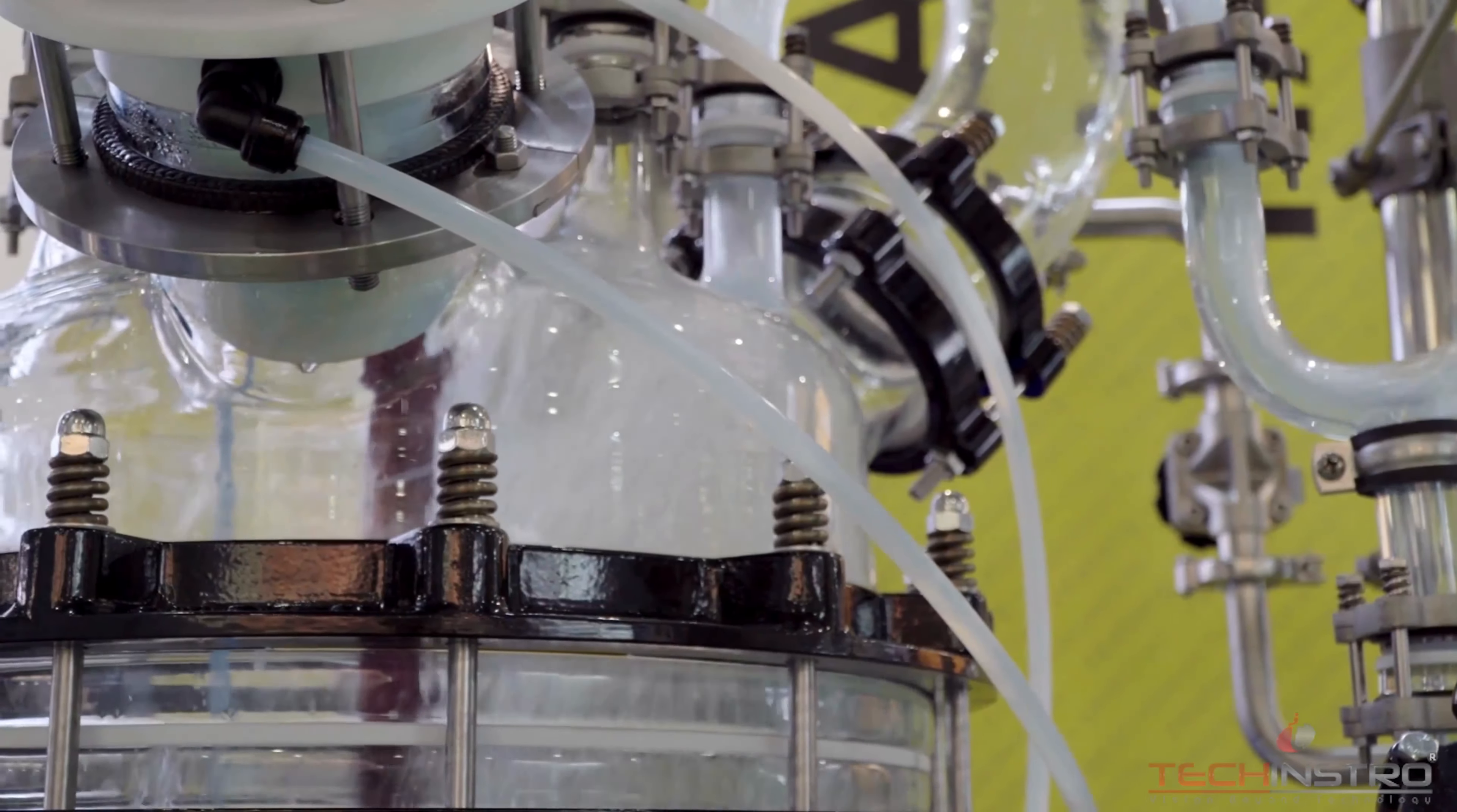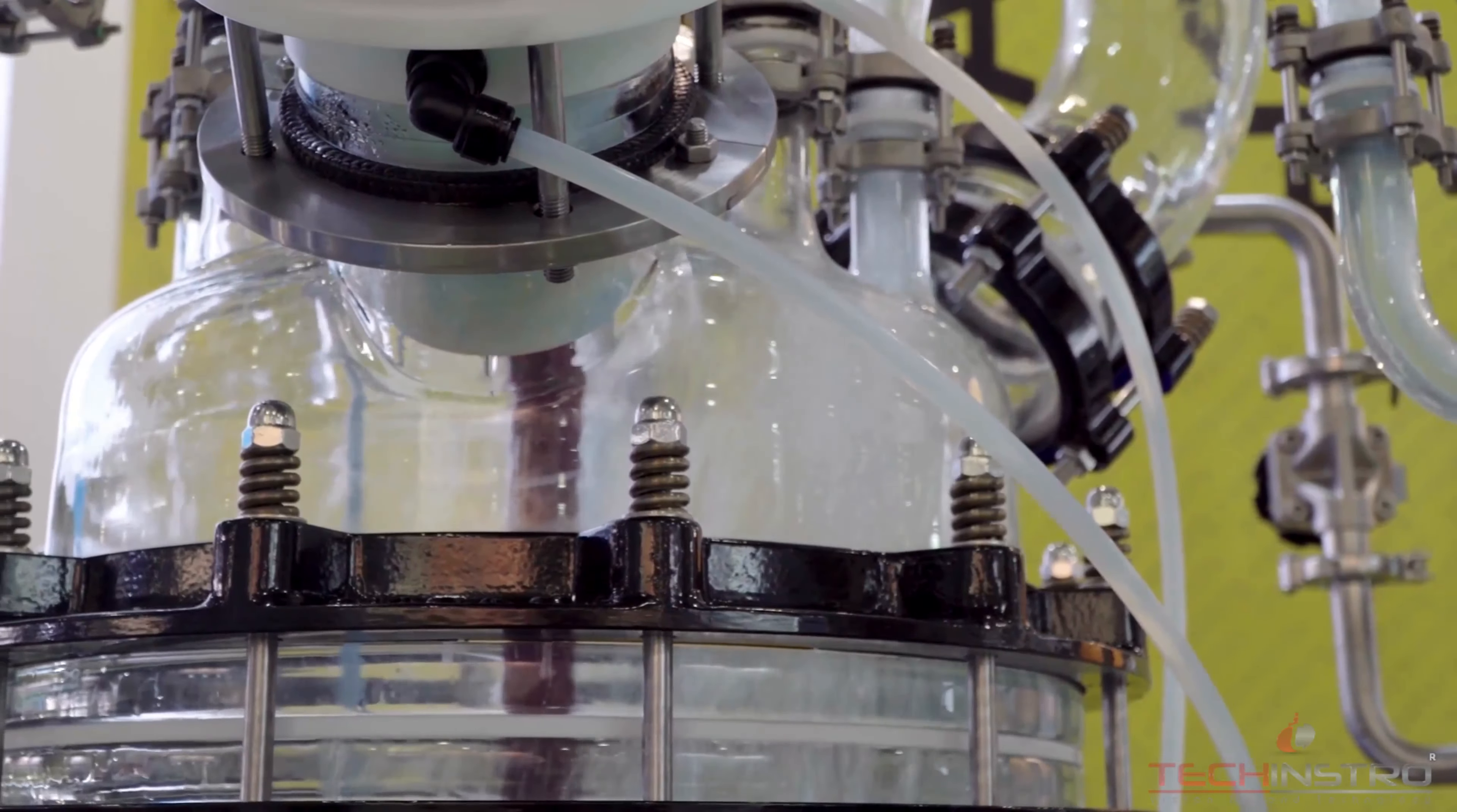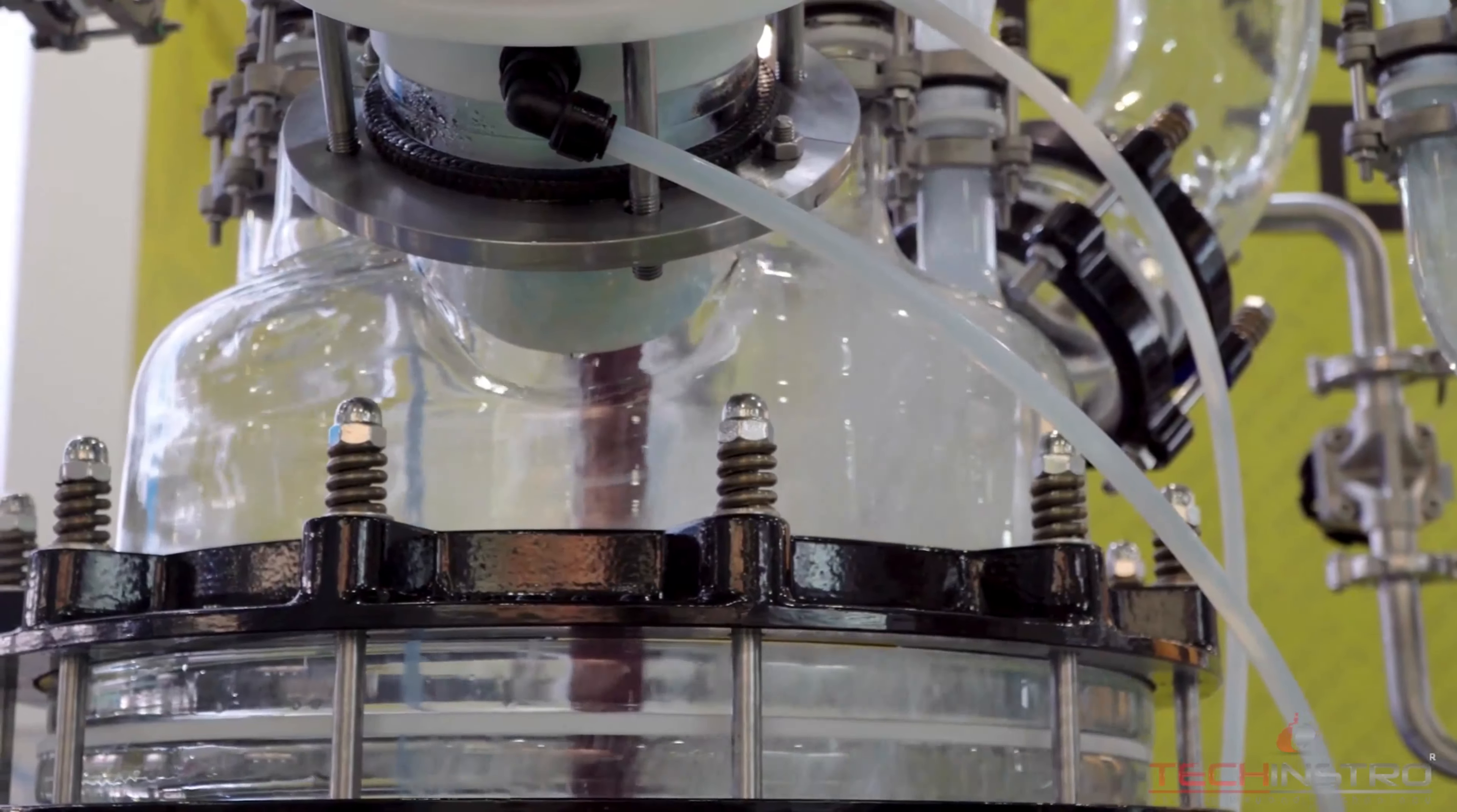The pressurization system of the reactor is equipped with systems to pressurize the contents within. This is achieved using a pressure source such as compressed gases or hydraulic systems. The pressure is increased to the level required for the specific chemical reaction. Pressures can range from a few hundred to several thousand psi (pounds per square inch) depending on the application.